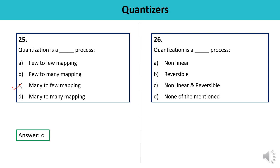Question 26: Quantization is — a non-linear process, a reversible process, non-linear and reversible, or none? Quantization is a non-linear and irreversible process — reverse operation is not possible. Since it is non-linear and irreversible, the answer is A — non-linear process.